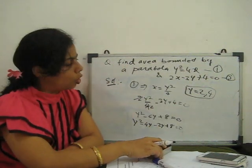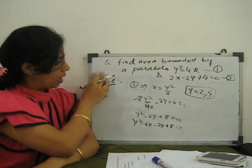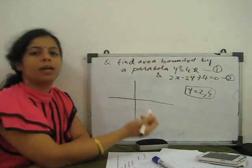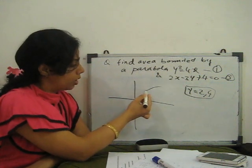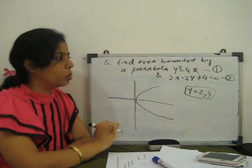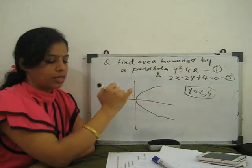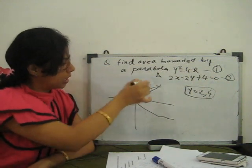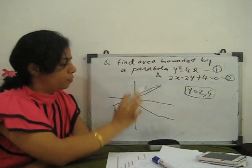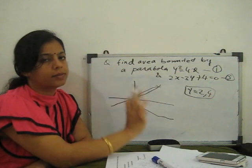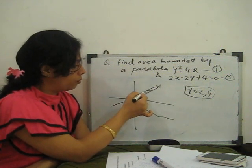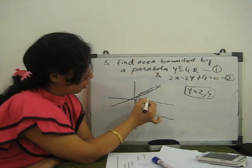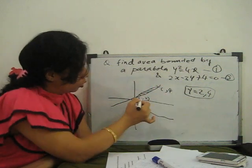To determine this, draw the curve. When you draw y² = 4x it opens to the right like a parabola. When you draw the line 2x − 3y + 4 = 0 it intersects the parabola. Plot the points carefully to get the exact region. We have found that y maximum goes from 2 to 4.